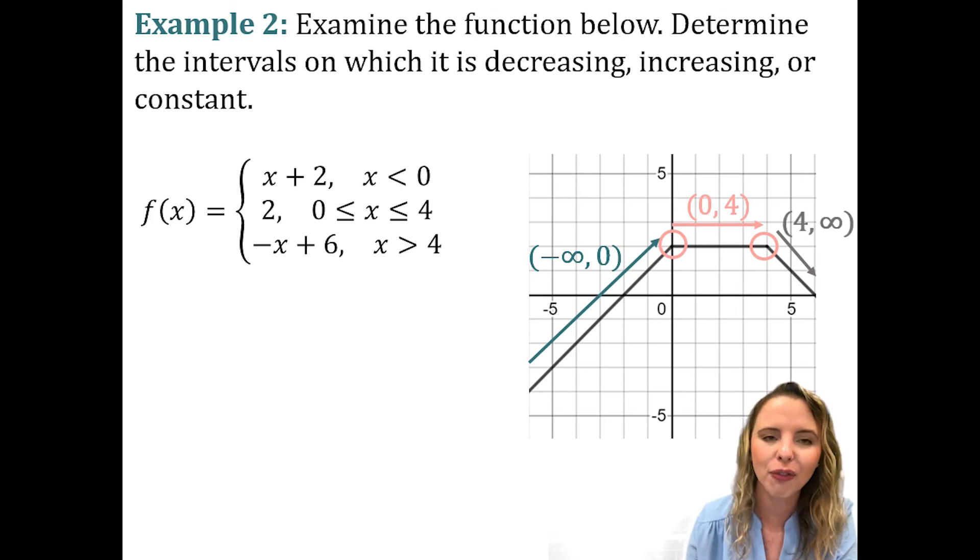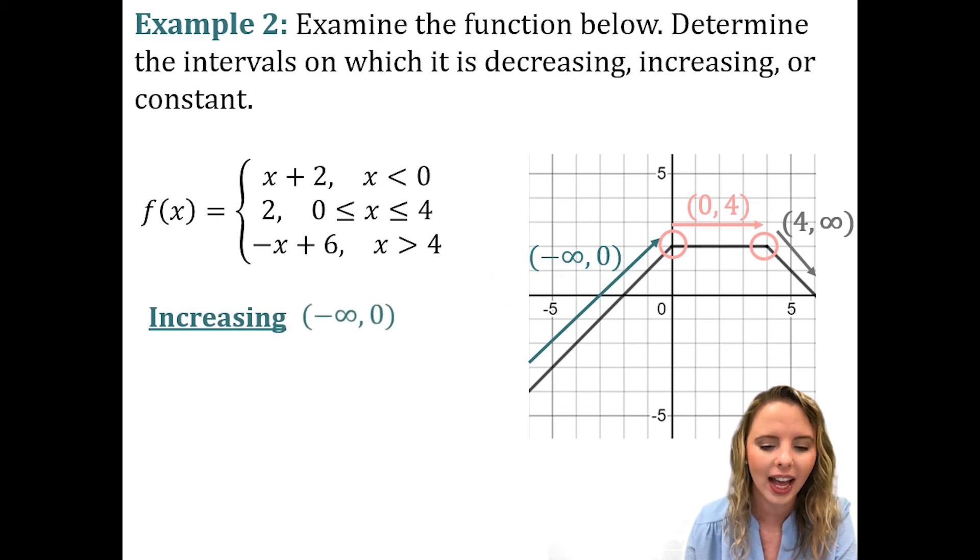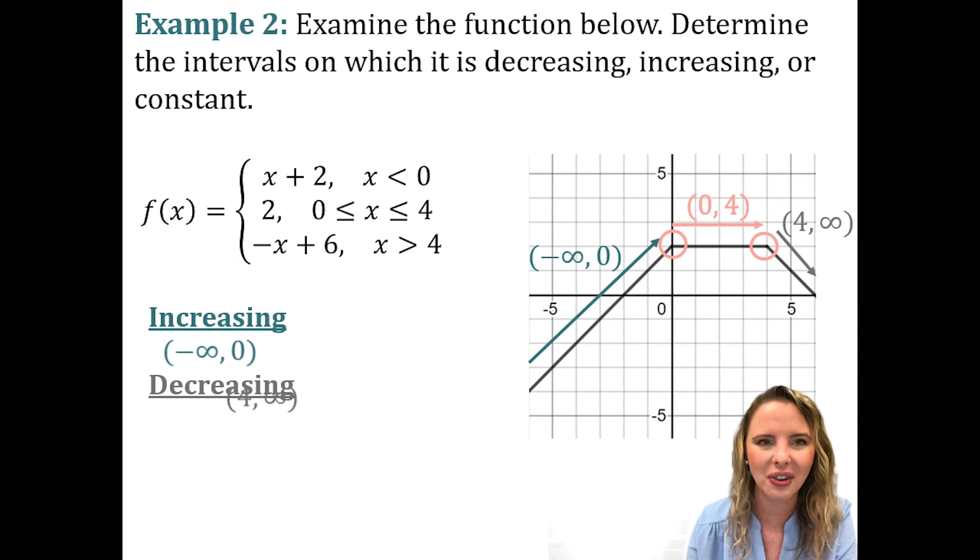And then, lastly, from four to infinity, we were going down. So, it's decreasing. So, our increasing interval negative infinity to zero. Our decreasing interval was four to infinity and our constant was zero to four.